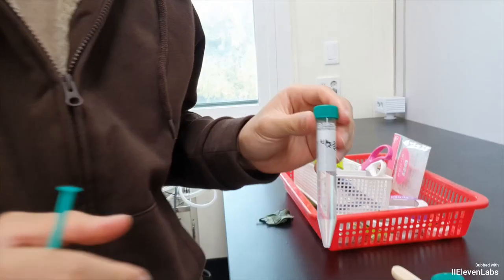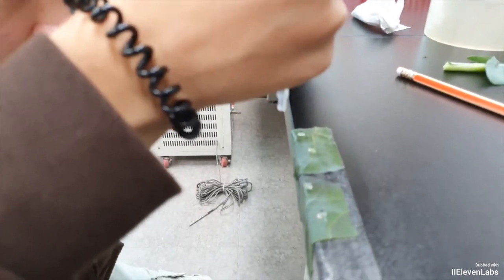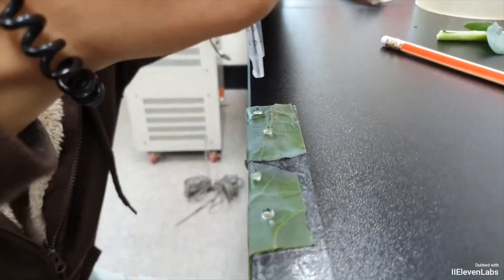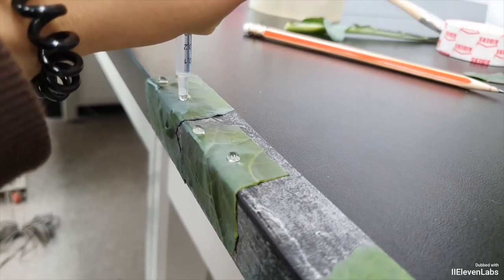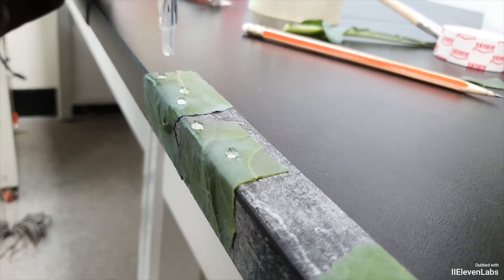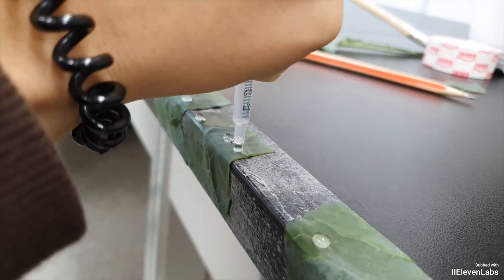The next step is to use the prepared 0.1% soap solution and apply it to the wax surface in the same manner to measure the contact angle. This will help students understand the role of surfactants. Soapy water acts as a surfactant, helping water droplets adhere better to the waxy surface of plants.